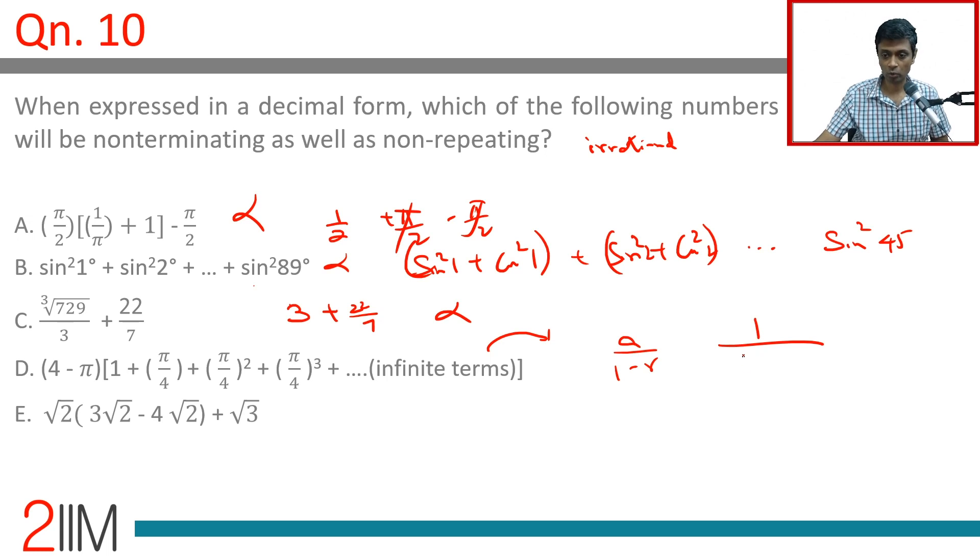The common ratio is π/4, so we get 1/(1 - π/4) = 1/((4 - π)/4) = 4/(4 - π). This is then multiplied by (4 - π).